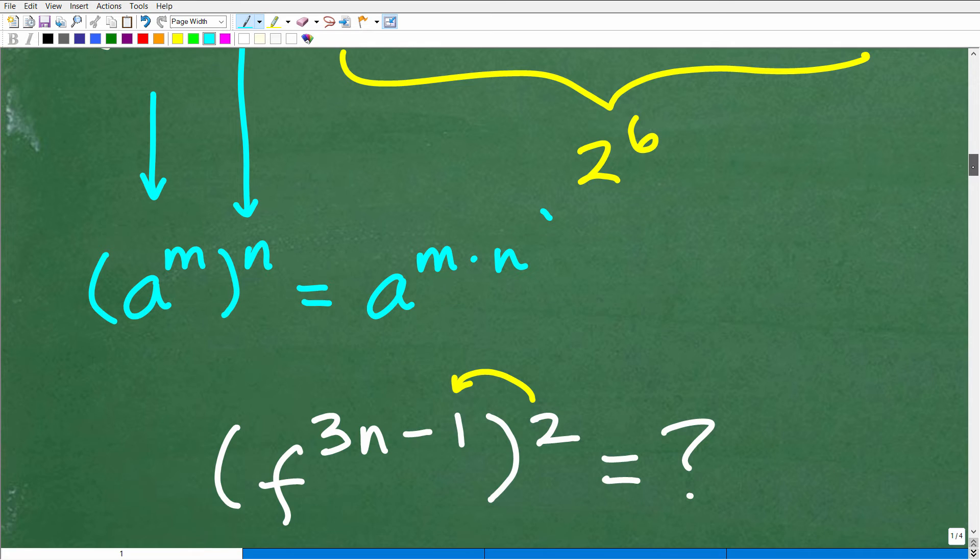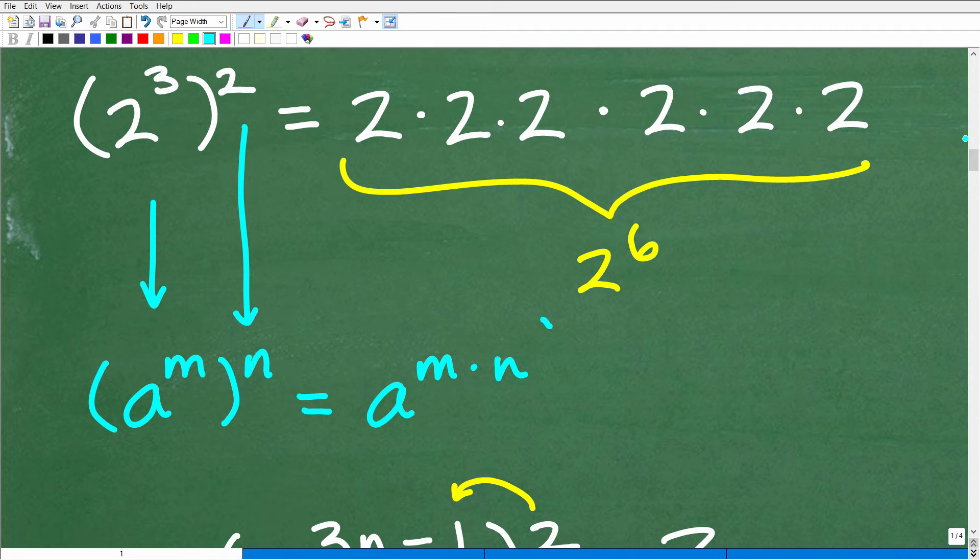So let's just kind of formalize the actual property here. Two cubed, we can kind of write this in a more general way: a to the m. Okay, so this is a power. We're just using variables here. Remember, variables are nothing more than placeholders. And then n will be our outside exponent, so it's another number. So a to the m to the n is equal to what?